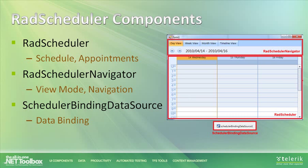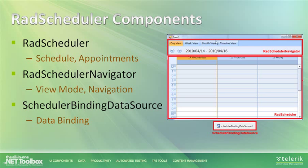RAD Scheduler consists of three separate controls. First, the RAD Scheduler itself — the calendar where you see and interact with appointments. Second, the RAD Scheduler Navigator — the control with day view, week view tabs, and date navigation. Third, the Scheduler Binding Data Source — the control used to bind RAD Scheduler to business objects or directly to a database. You can use the scheduler alone or combine all three components.